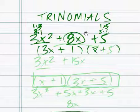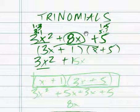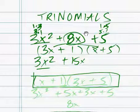So let's try 3x plus 1 and x plus 5, just to try it out. 3x squared plus 15x. That equals 15x. Well, we know that's not the right one. We can just stop right there because it's not 8x. So let's try it again.